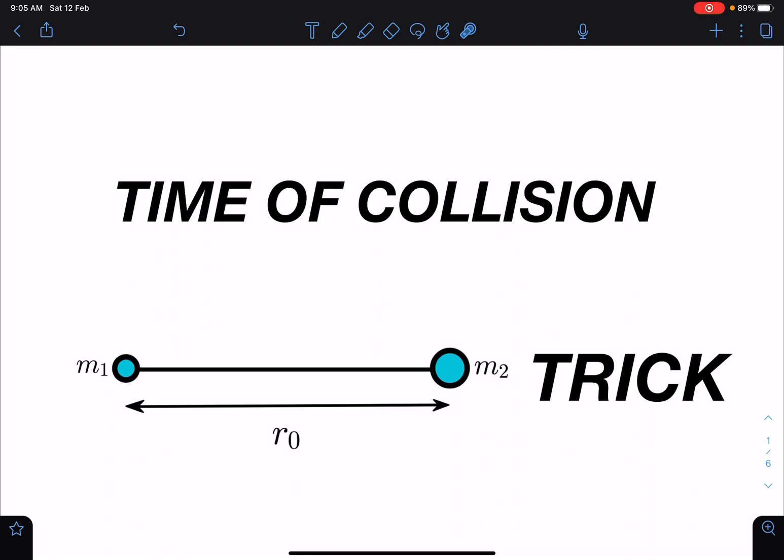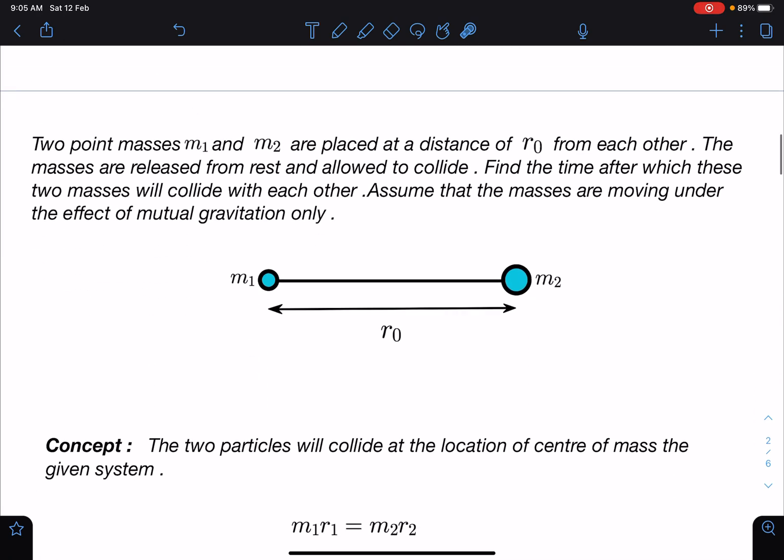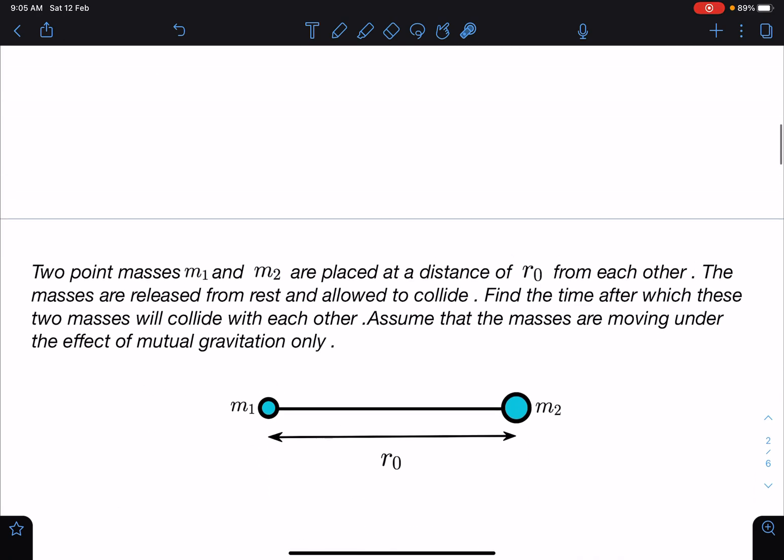So here is the problem statement: Two point masses m1 and m2 are placed at a distance of r0 from each other. The masses are released from rest and allowed to collide. Find the time after which these two masses will collide with each other. Assume that the masses are moving under the effect of mutual gravitation only.